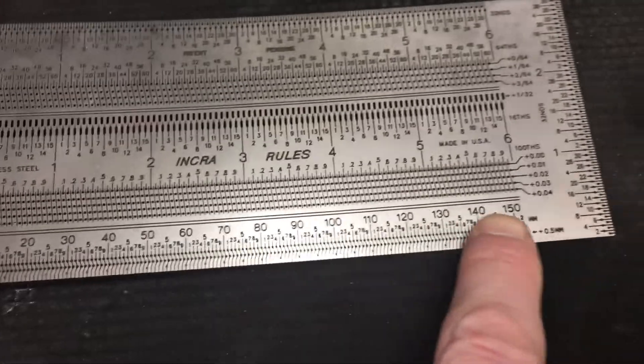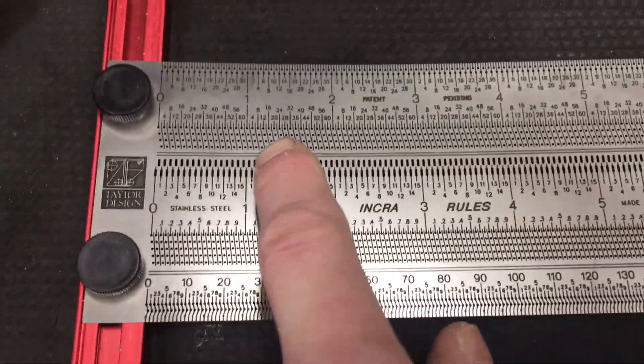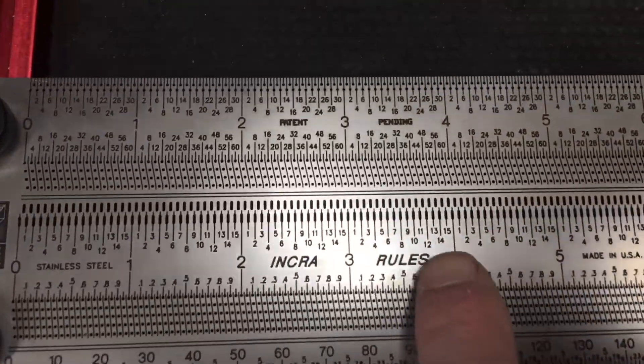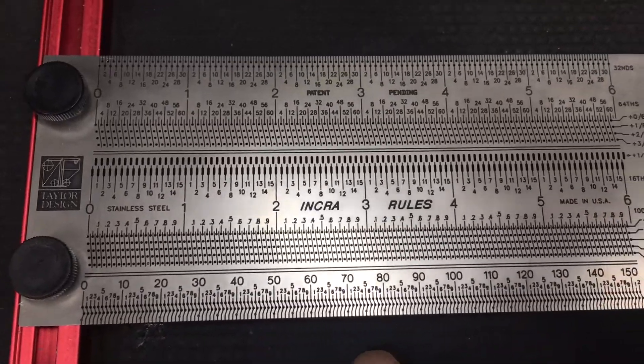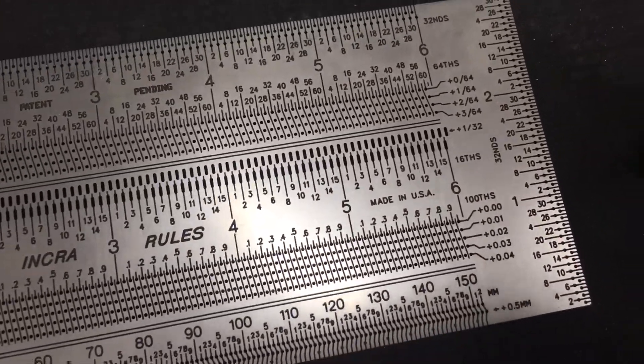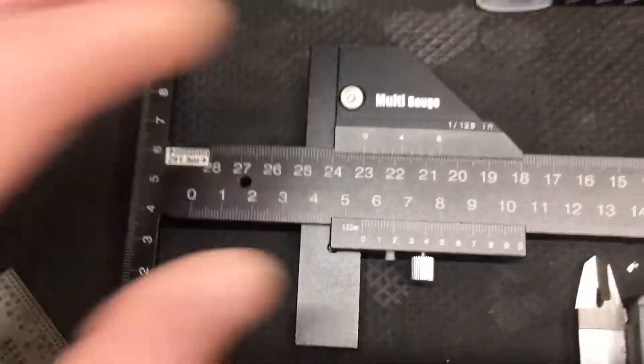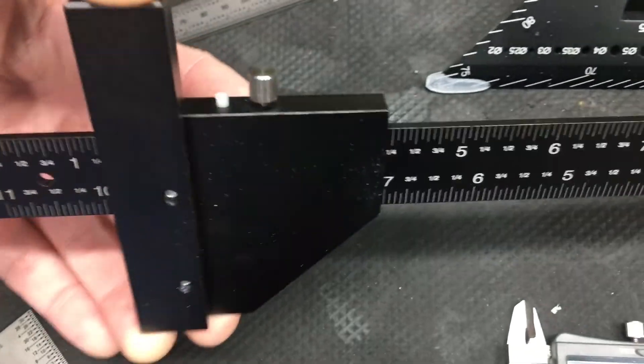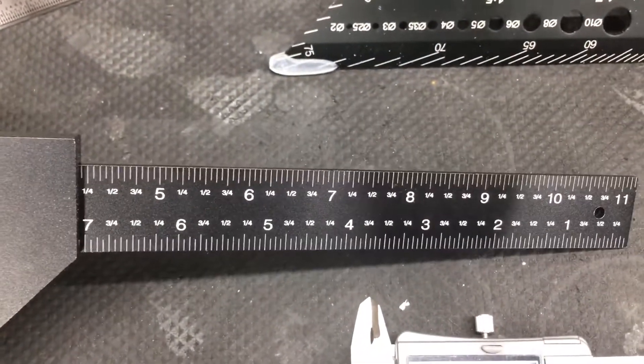down here at the bottom and the rest of it is imperial, which sometimes to transfer over you need because we still use the imperial system quite a bit. And this one too, you could just turn the ruler over and it makes it a standard.